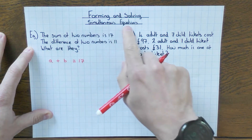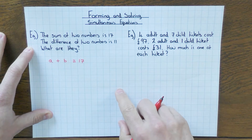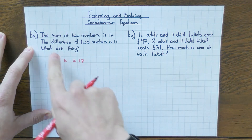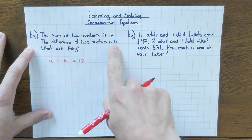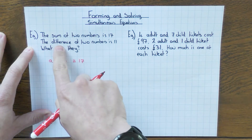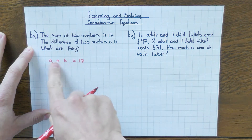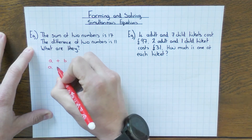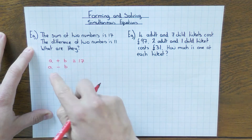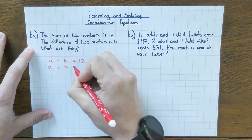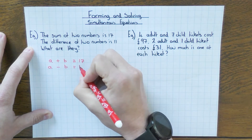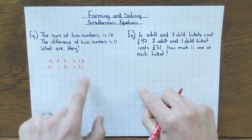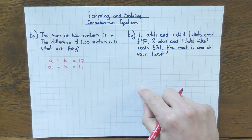If you've seen the other video on how to solve simultaneous equations, you'll know that you need two equations. So there's the first one. The second one is going to come from the second line — the difference of the two numbers. The difference between A and B is 11, so A minus B equals 11. There are your two equations to now solve simultaneously.